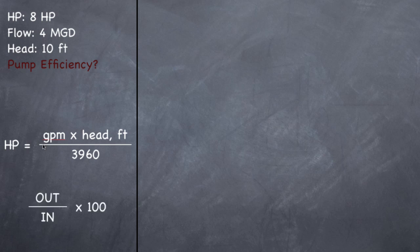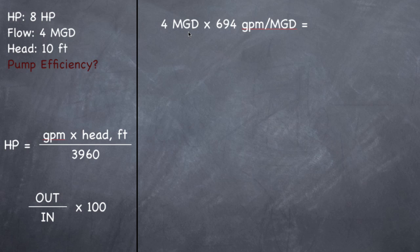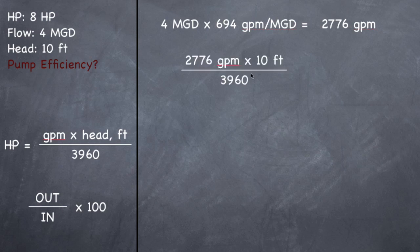Since it's an efficiency problem, you find the output divided by what it's supposed to be, then multiply by 100. So 4 MGD times 694 gallons per minute per MGD gives 2,776 gallons per minute. Then 2,776 times 10 feet divided by 3960 gives you 7 horsepower.